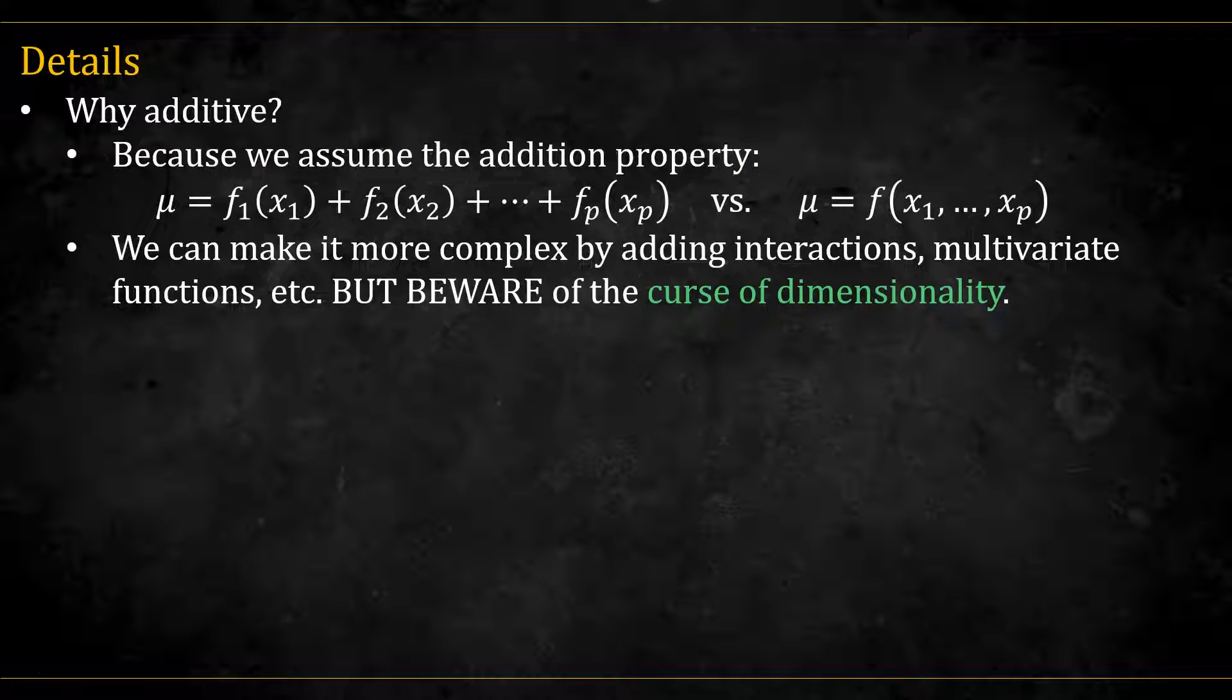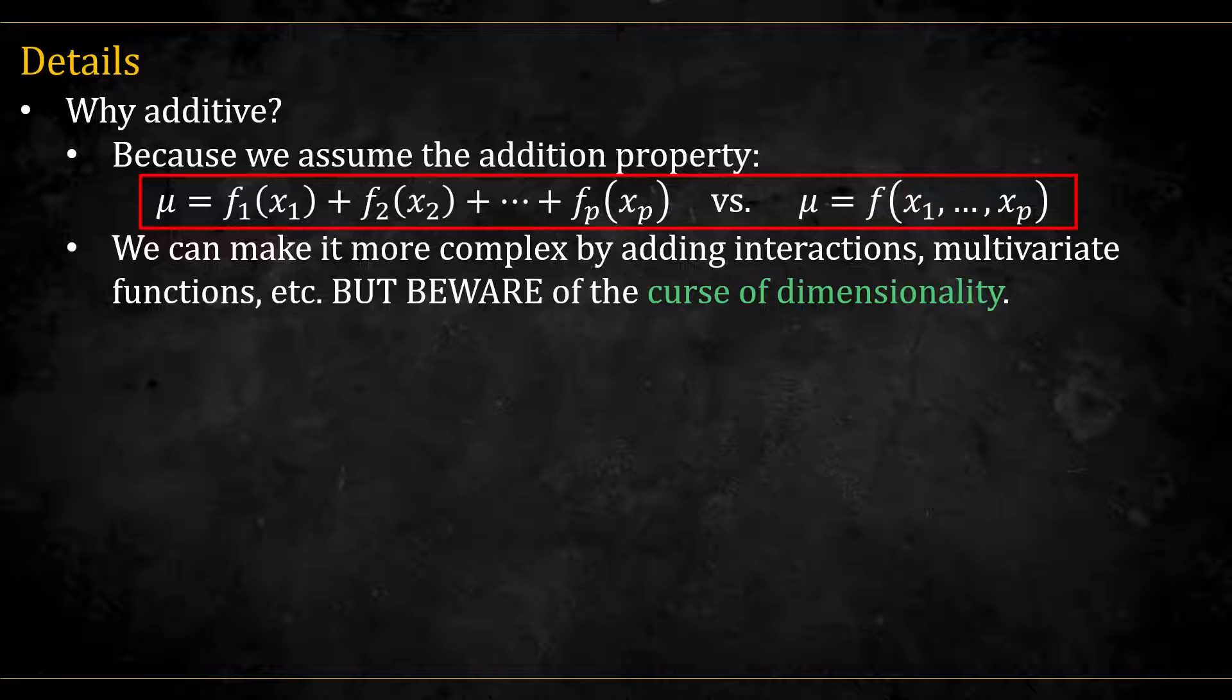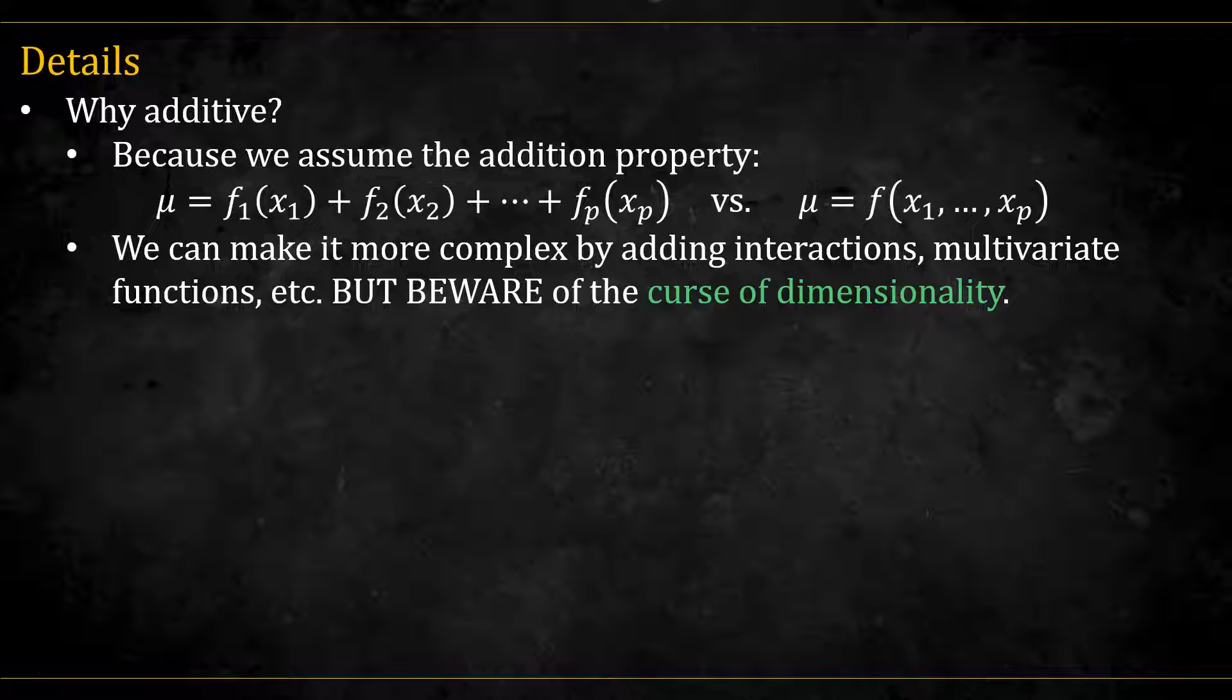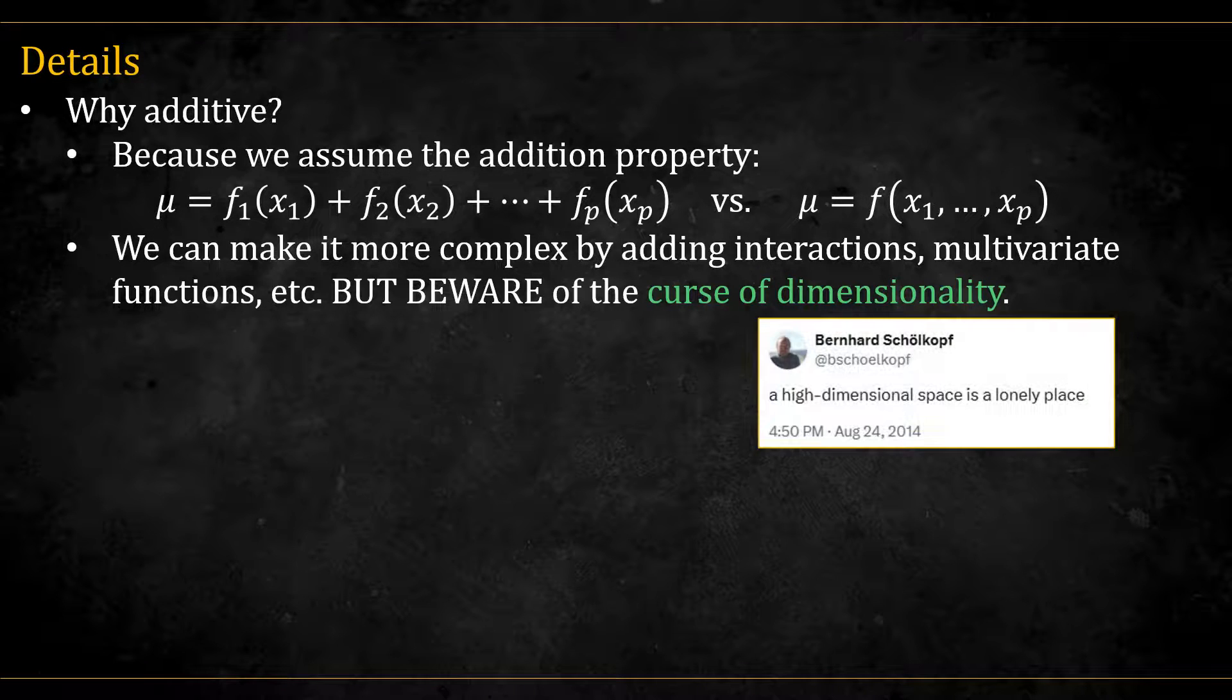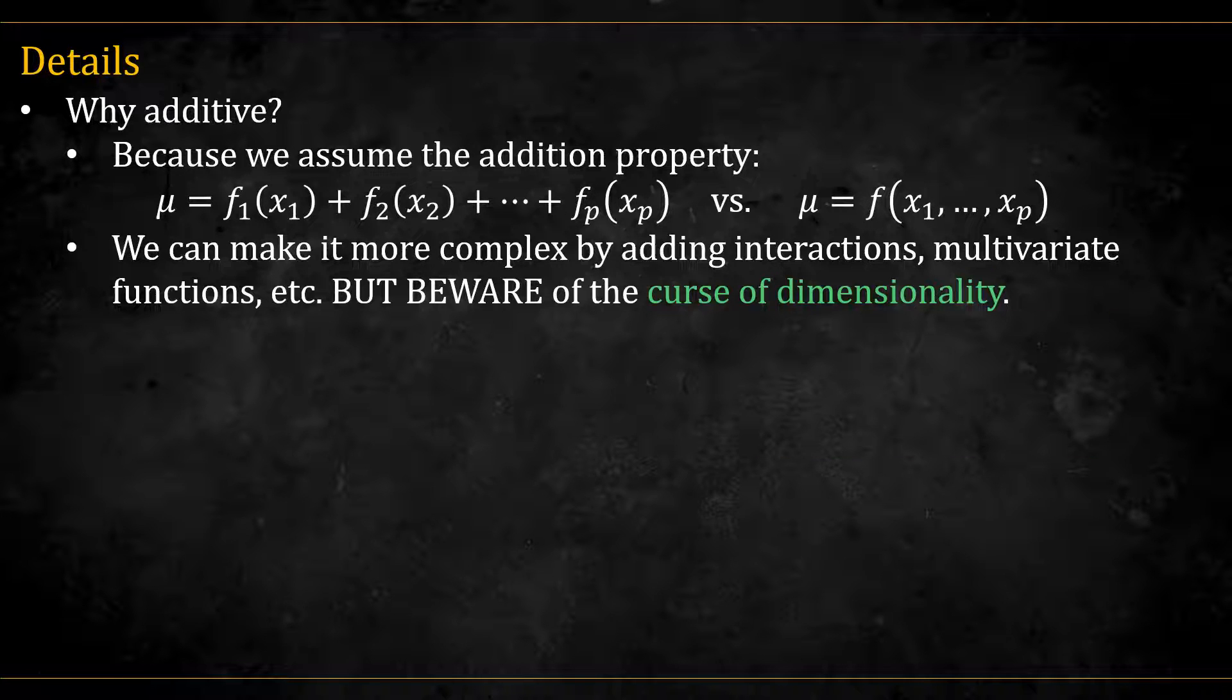Why is it called additive models? Because of the very big assumption we made that the functions are additive. I mentioned that you could also incorporate interactions or multivariate functions, but you have to be careful here with the curse of dimensionality. High-dimensional space is a very lonely space. The data becomes very sparse. It's hard to get good smoothers in high dimension, and so this is why the additive assumption is important.